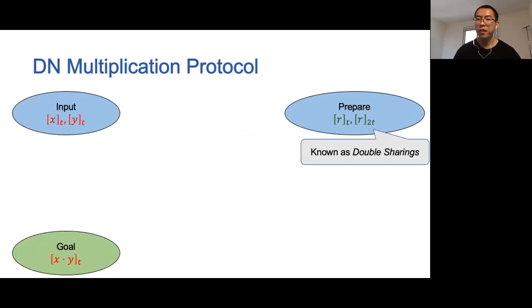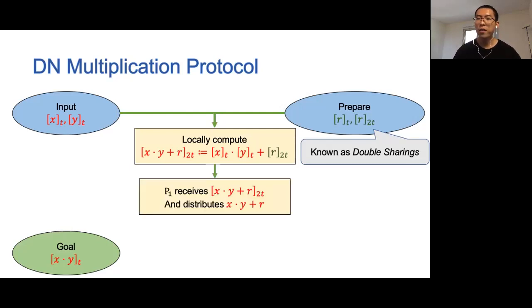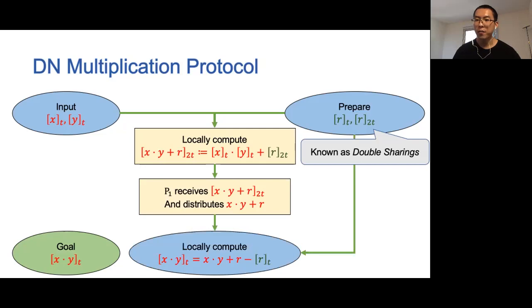The DM multiplication protocol starts with a pair of random sharings of the same value: one is a degree-t sharing and the other is a degree-2t sharing. These two sharings are referred to as double sharings. Double sharings can be efficiently prepared; we omit the generation process for simplicity. All parties first locally compute a degree-2t sharing of x times y plus r. Each party simply multiplies its shares of x and y and adds its share of r. Then the first party P1 receives the whole sharing of x times y plus r, reconstructs the secret, and distributes the result to all other parties. Finally, to obtain the correct result, all parties subtract the random degree-t sharing of r from the reconstruction result. This completes the DM multiplication protocol.